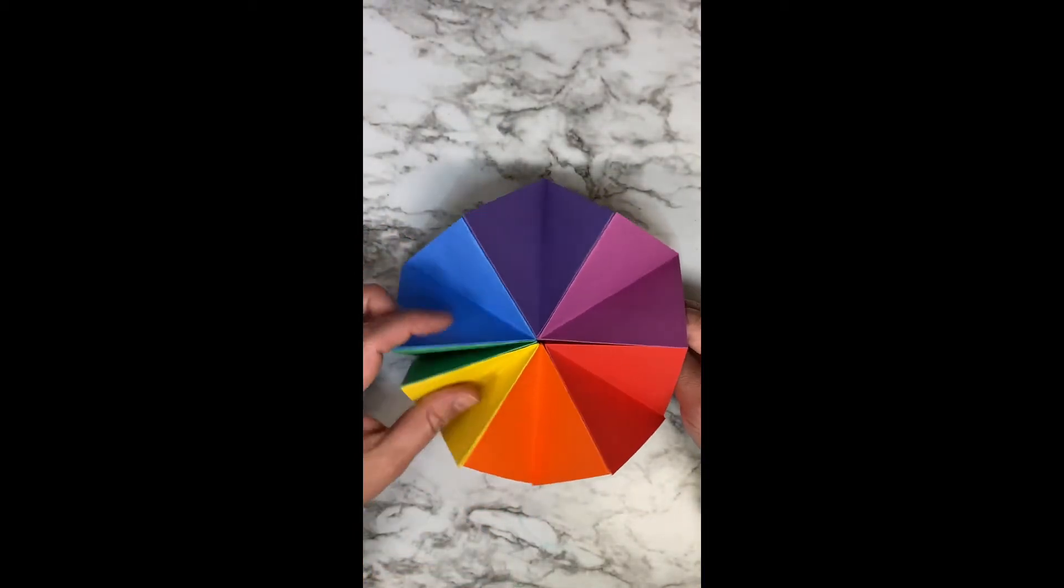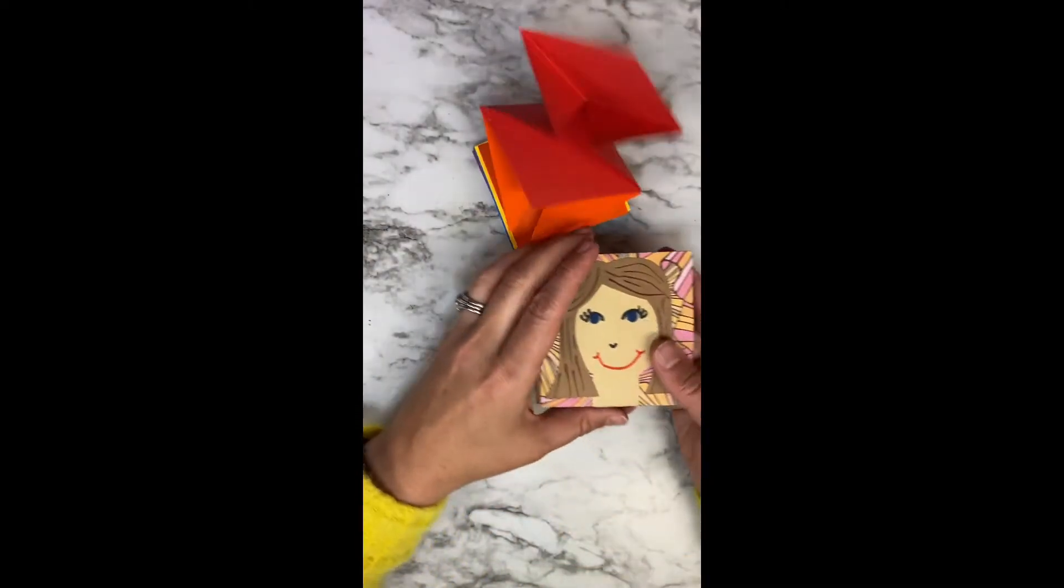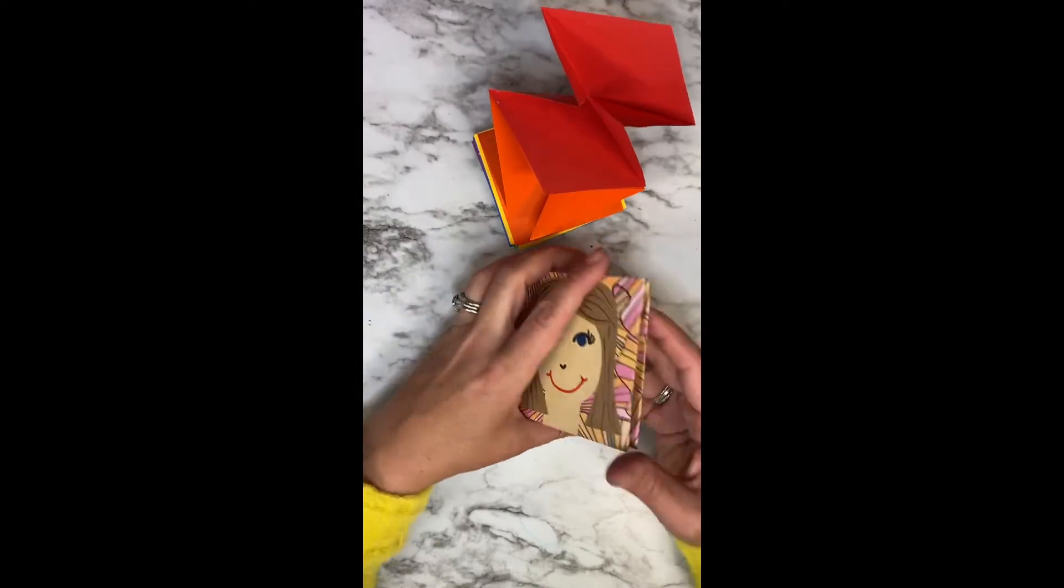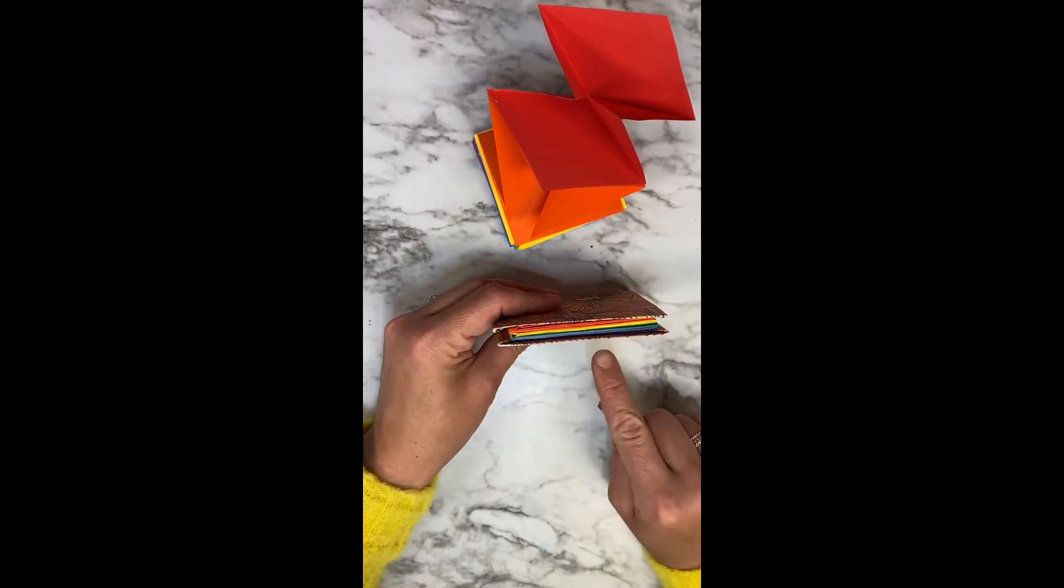Now from here, if you want to add a cover to the book, it's super easy. So this book has a smaller cover. So the pages fit right into the book.